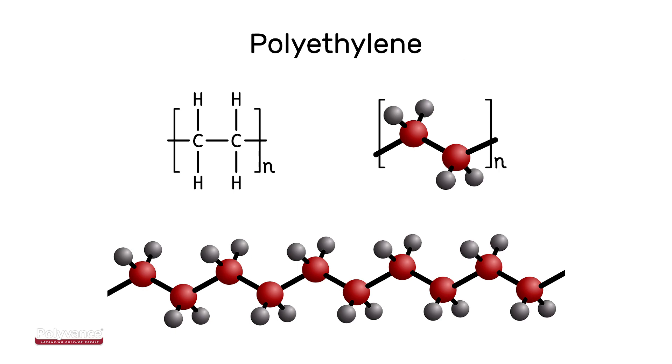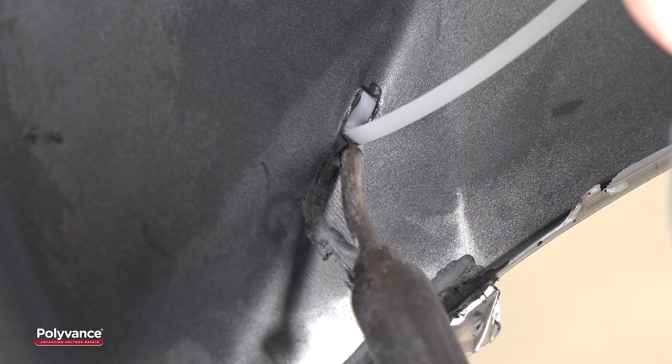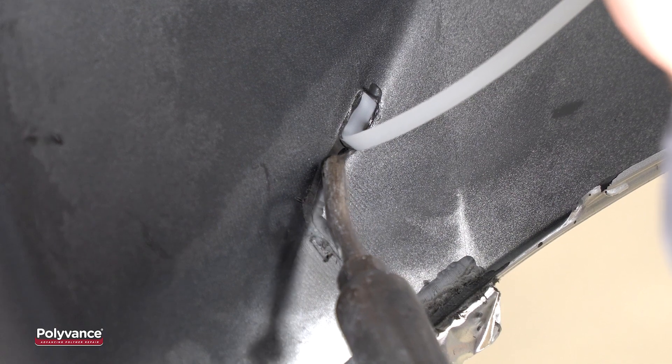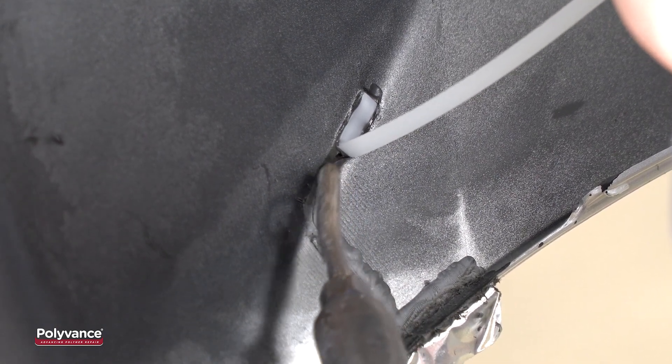Thermoplastics are comprised of long chains of carbon molecules that intertwine and lock in place due to weak bonds between the molecule chains. Heat breaks these weak bonds and allows the molecule chains to slip past one another. This is what happens when you melt a thermoplastic.